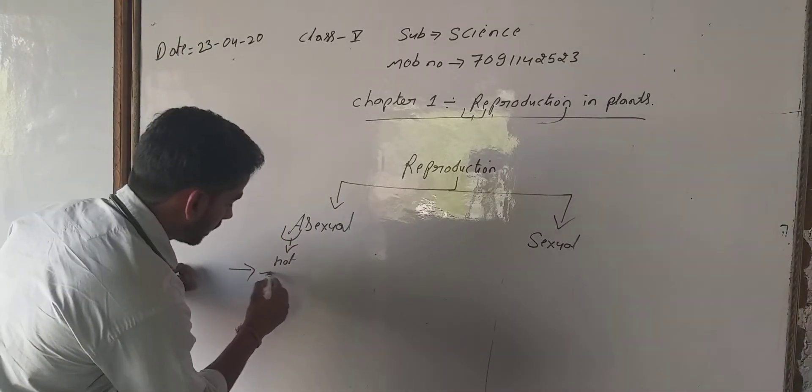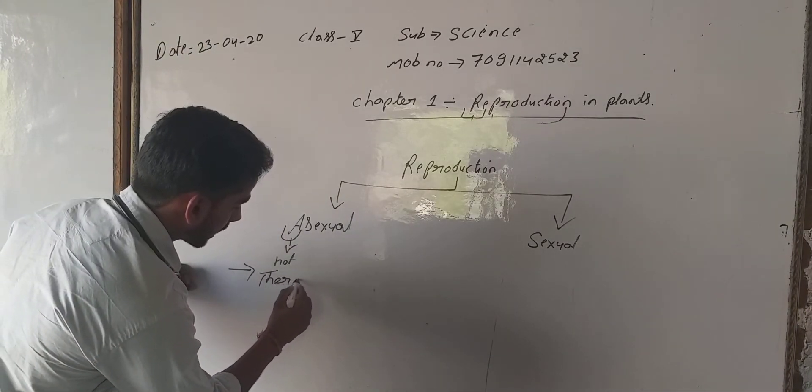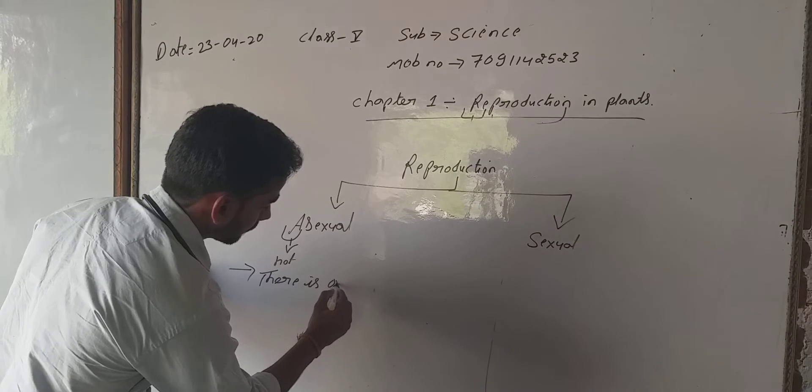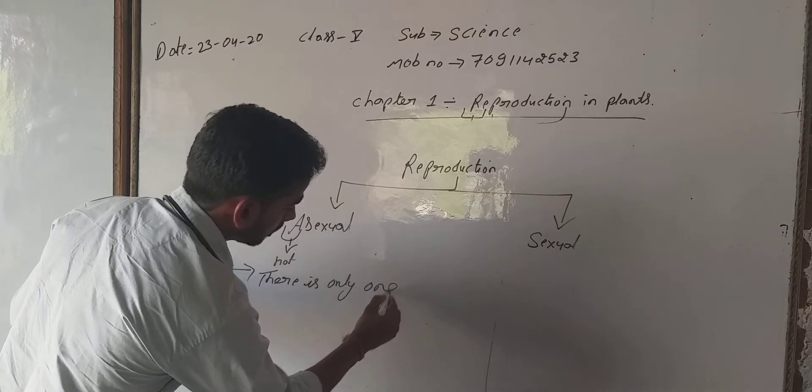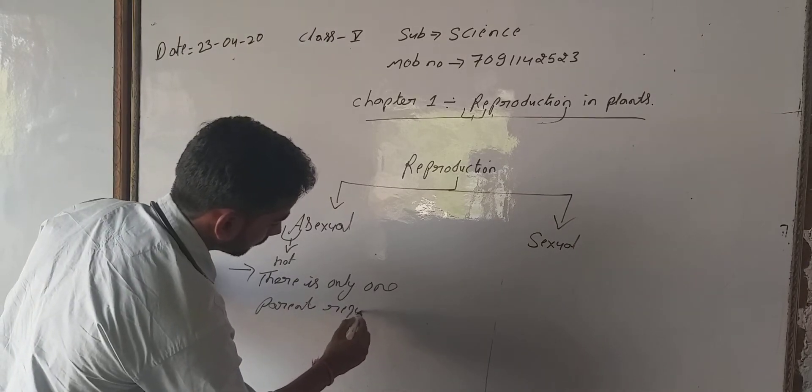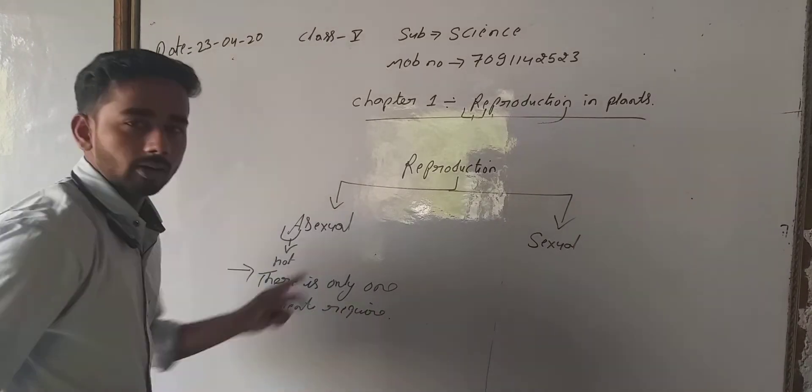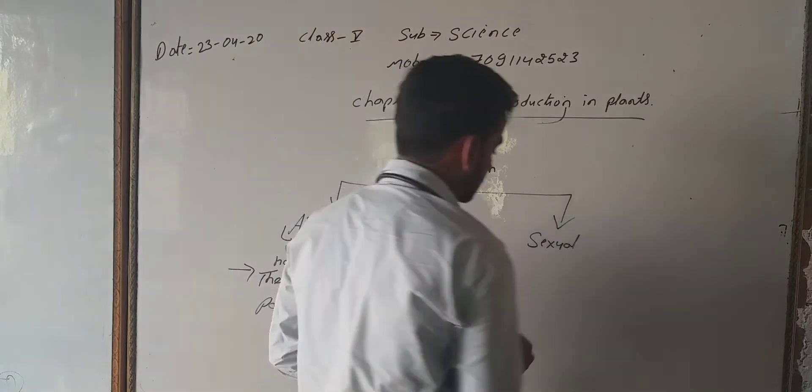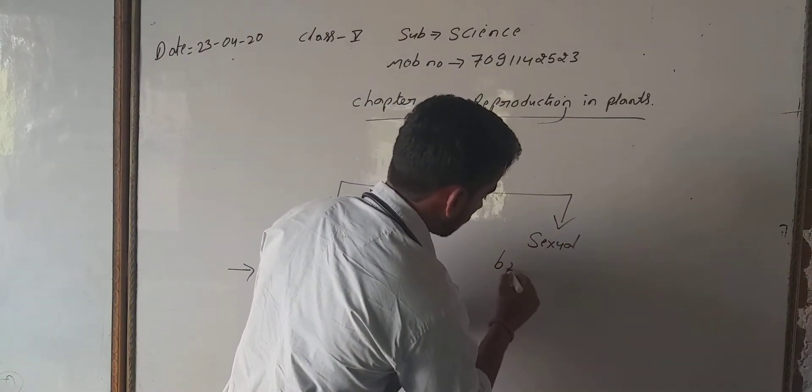In asexual reproduction, there is only one single parent required, either male or female. But in sexual reproduction, both parents, male and female, are required.